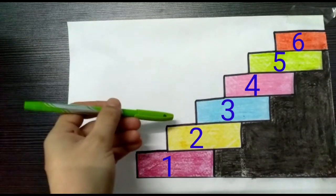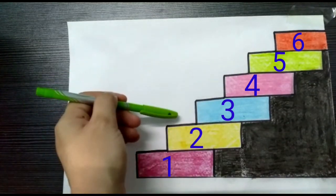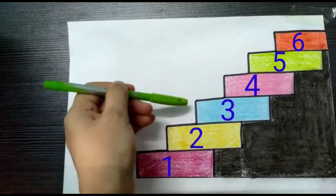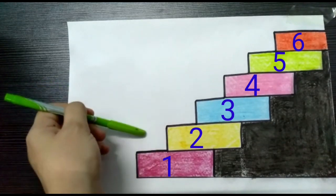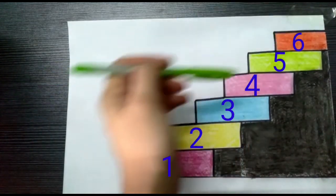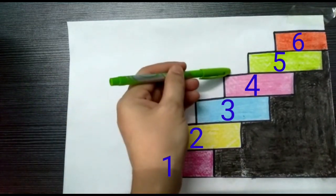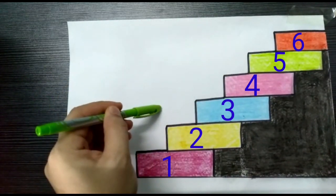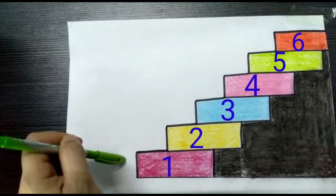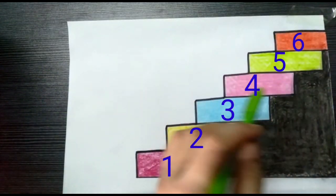Children, can you see the stairs? Each stair has a number from 1 to 6. In ascending order, each number gets bigger or greater than the previous number as it moves from down to up.